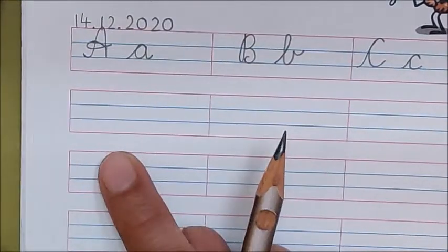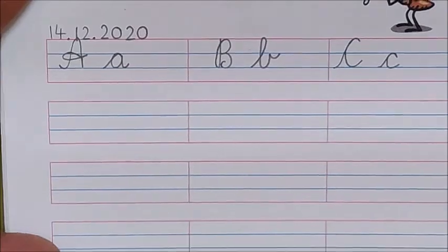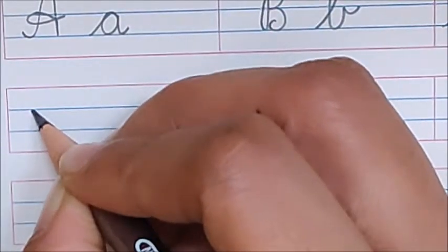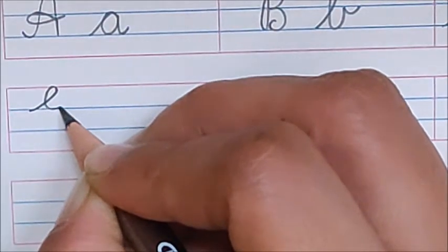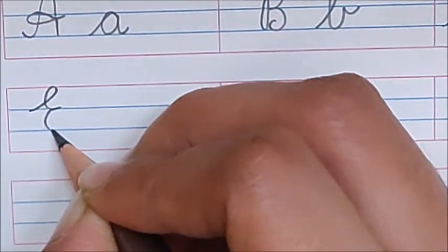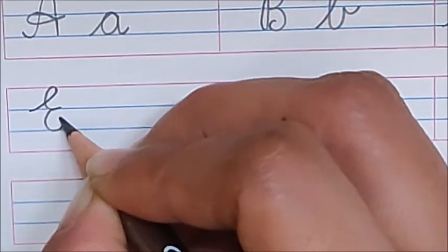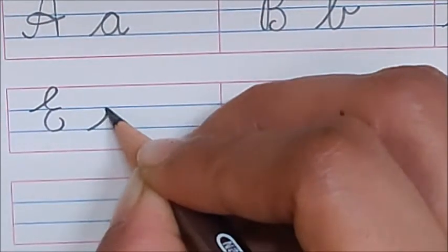Come to the next line. And here, write down E. How to write E? Slanting line, loop behind. One round and one more round. And turn inside.